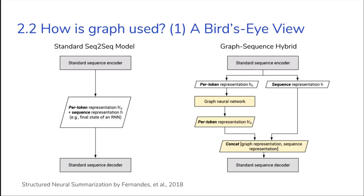Texts are naturally a graph. For example, words can be next to each other via 'next' edges, belong to a sentence via 'in' edges, or co-reference the same thing via 'reference' edges. There is a natural hierarchical structure and interconnection making text a great candidate for graph representation. The high-level architecture adds a graph component to augment the standard sequence-to-sequence model — concatenating graph and sequence representations before passing to the standard decoder.